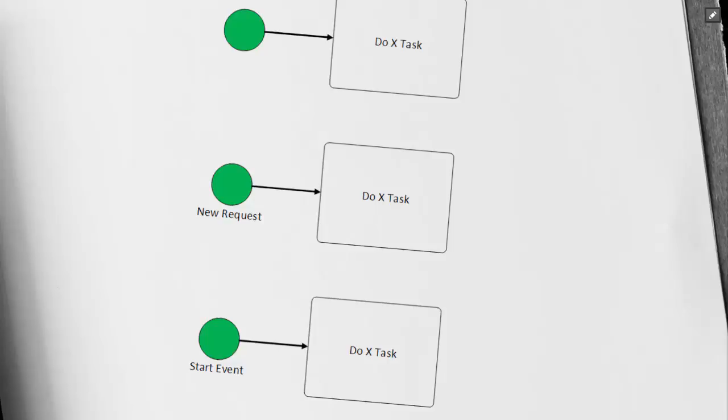Looking at our example second from the top, we can see this start event is labeled New Request. New Request here indicates that we know what our start event trigger was.